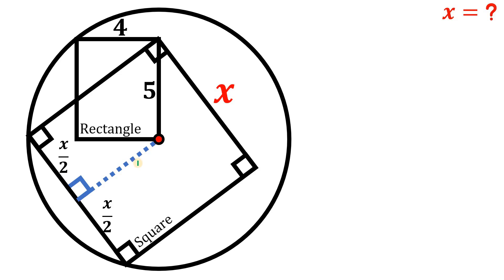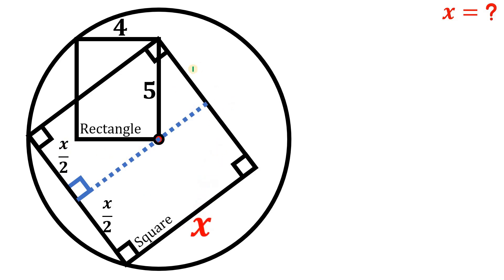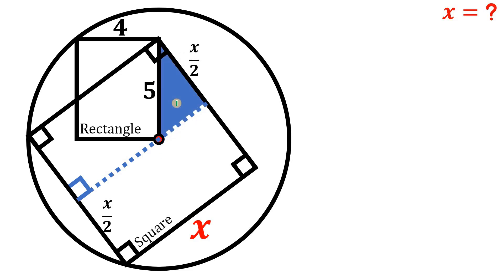Next, what we're going to do is extend this segment and place x/2 on this position and x/2 on the other side, because we will use a right triangle to find the value of x. Not this one — we need another right triangle, and here it is.